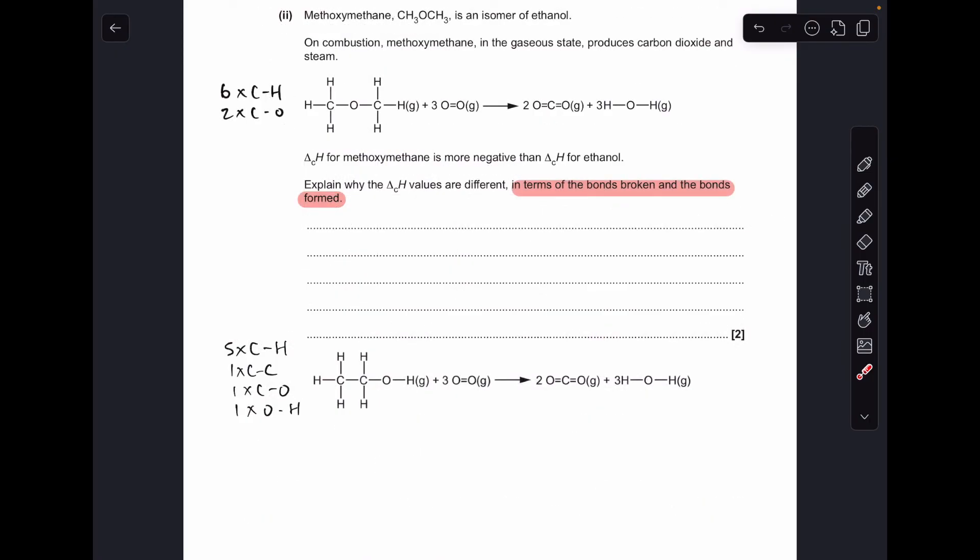And finally, this explanation of why the enthalpy change of combustion for methoxymethane is more negative than for ethanol. But we've got to do it in terms of bonds broken and bonds formed. We can't just do another calculation. So I've got the original equation at the bottom there. There's the new one. So you can see there's a lot of common features to it. So three moles of oxygen are involved. So obviously those bonds are going to be broken. And bonds formed identical. So two moles of CO2, three moles of H2O.